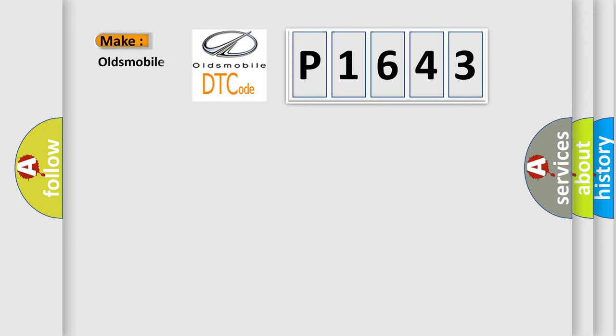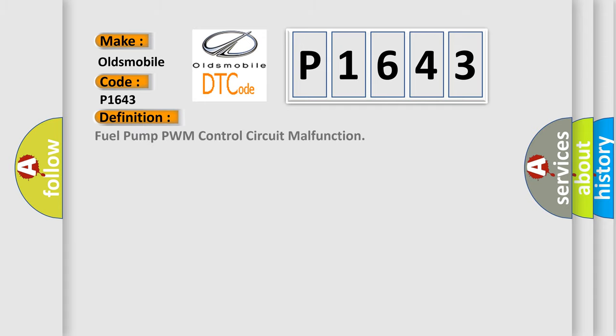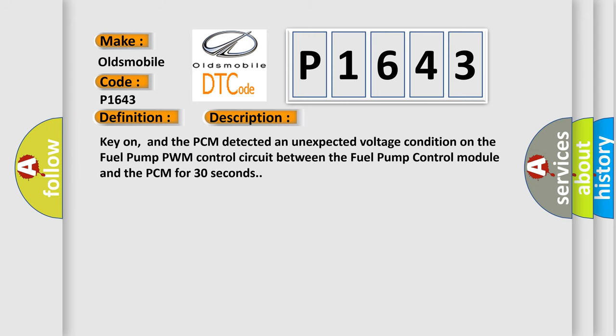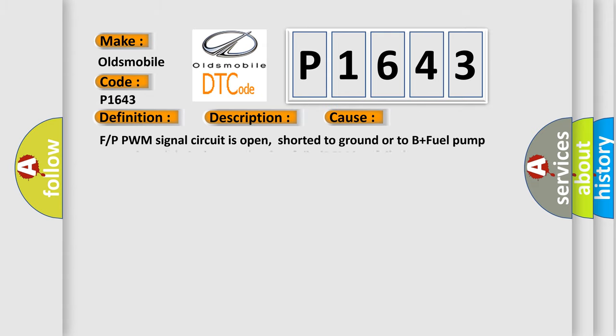So, what does the diagnostic trouble code P1643 interpret specifically? Oldsmobile. The basic definition is: Fuel pump PWM control circuit malfunction. Here is a short description of this DTC code: Key on, and the PCM detected an unexpected voltage condition on the fuel pump PWM control circuit between the fuel pump control module and the PCM for 30 seconds. This diagnostic error occurs most often in these cases: the PWM signal circuit is open, shorted to ground, or to B+; the fuel pump control module is damaged or has failed; or the PCM has failed.